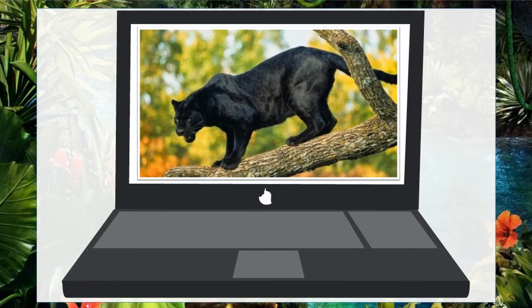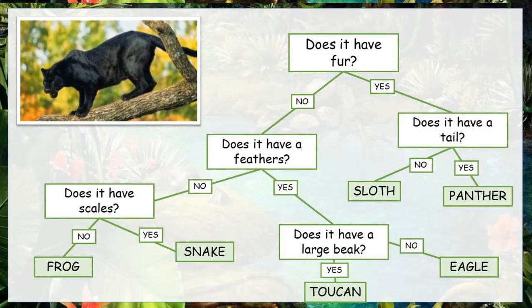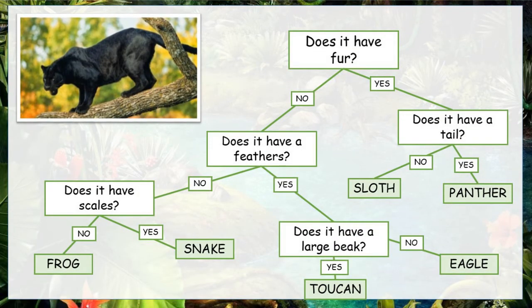Let's see if you can figure out what species this is using one of the professor's classification keys. Are you ready? Take a look at this classification key. Pause the video and see if you can figure out which species it is by following the key correctly. Did you get it correct? Our first question — does it have fur? Yes. Does it have a tail? Yes. So it's a panther! Did you get that? If you did, you're halfway there to becoming a rainforest scientist.